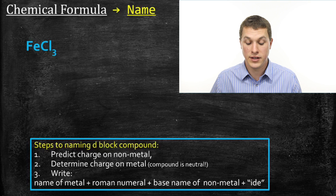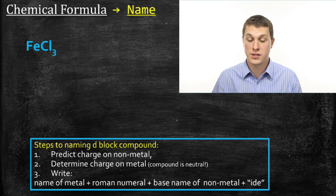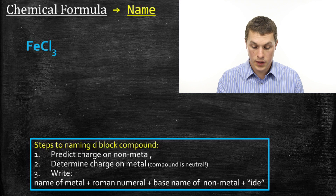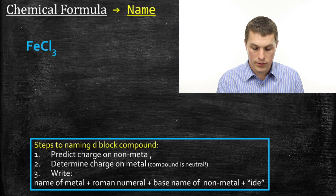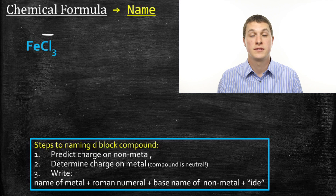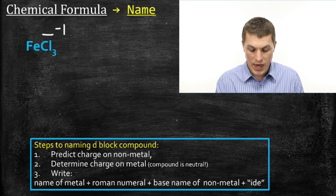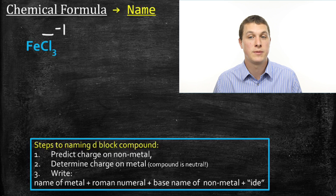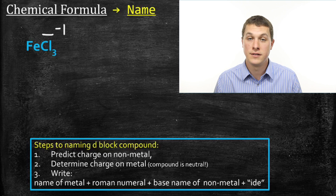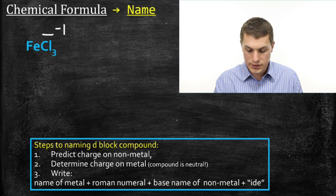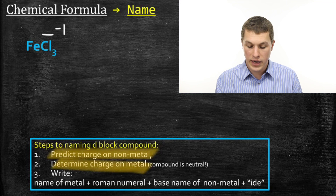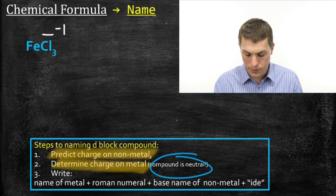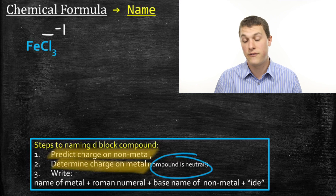Let's go to our first example, which is FeCl₃. The first thing we're going to do is predict the charge on our non-metal, and we can do that the same way we've done in previous videos, because our non-metal isn't in the D block. Our non-metal in this case is Cl — remember that our non-metal always comes second. The charge on chlorine is always negative one, and we know that from its position on the periodic table. So step one: determine the charge on the non-metal.